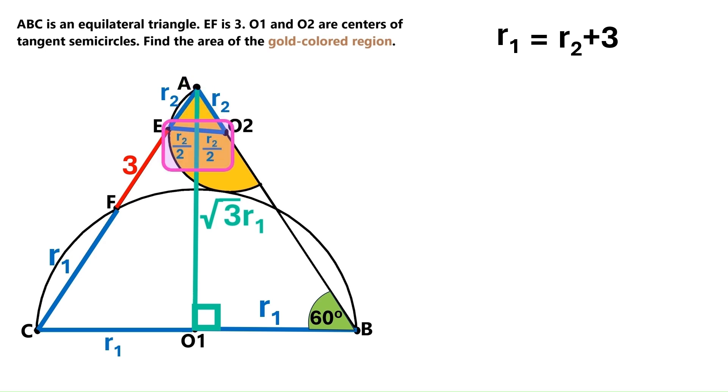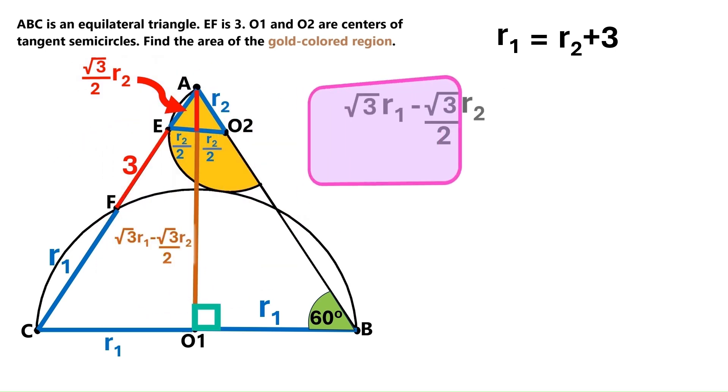So these segments are both R2 over 2. And we can use the same tangent function we used a few seconds ago to figure out that this red segment is radical 3 over 2 times R2. And if we subtract that from the height of the big equilateral triangle, we get this as the length of the brown segment. Now, let's work on this expression to find out what it equals. We know R1 is R2 plus 3, so we can replace this R1 with that.